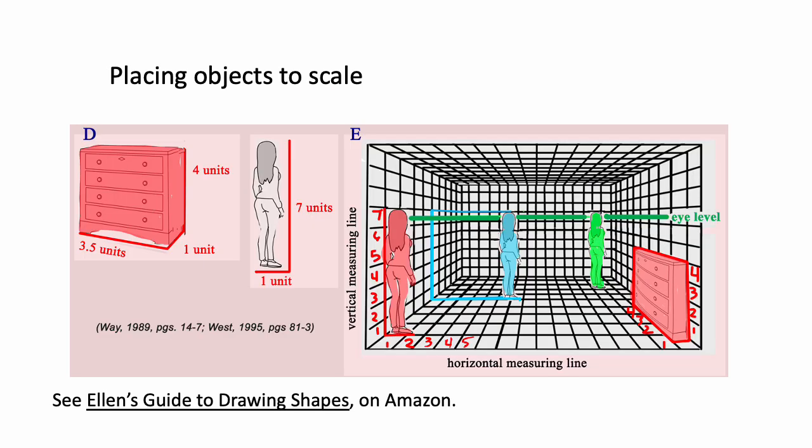So you can put elements to scale if the units on the horizontal measuring line and vertical measuring line are the same, so that these are squares with equal sides. Then if you have, for example, this figure, which is one unit wide and seven units tall, you can put her here or over here. You can put her anywhere in the room and just count the tiles until you go up seven times and over one. And similarly, I place this bureau over here. So everything can be in scale.